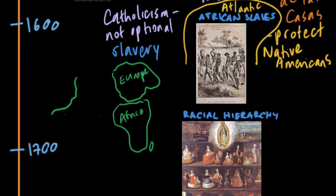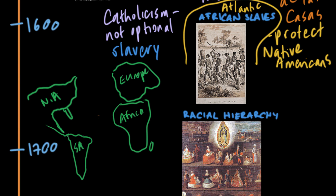This was directly connected to the competition between European powers for a stronghold in the new world. This began with the Spanish in 1492 with Christopher Columbus, but slowly also the English, the Dutch, the Portuguese — everyone is trying to establish their own colony that they could hopefully gain a lot of new resources from and establish glory in this new world. And having slaves was a really big part of being able to do that.